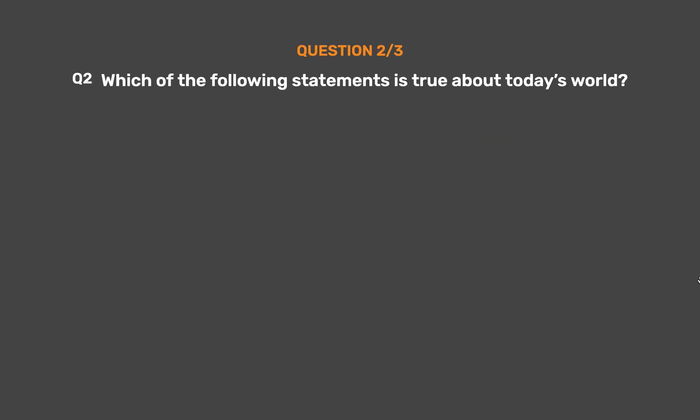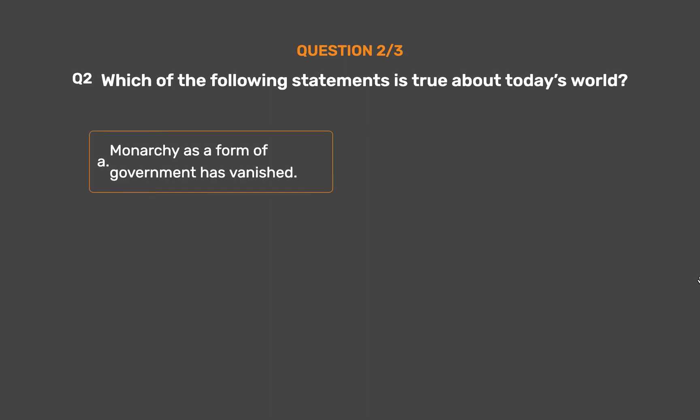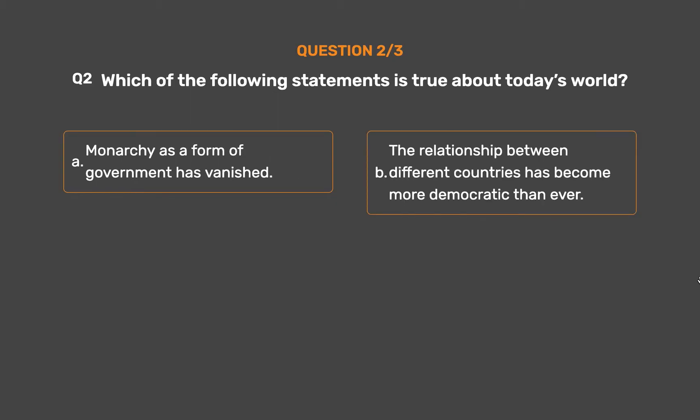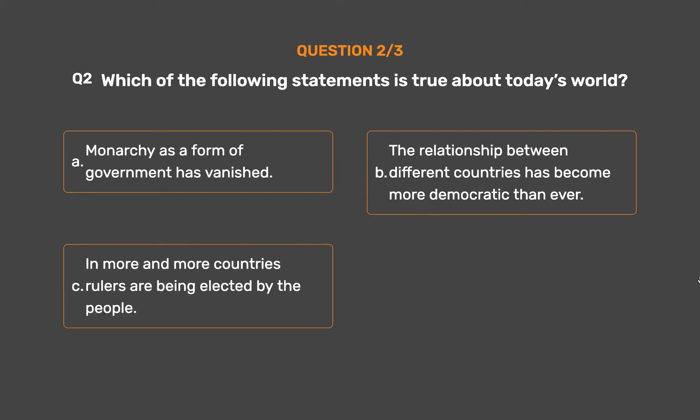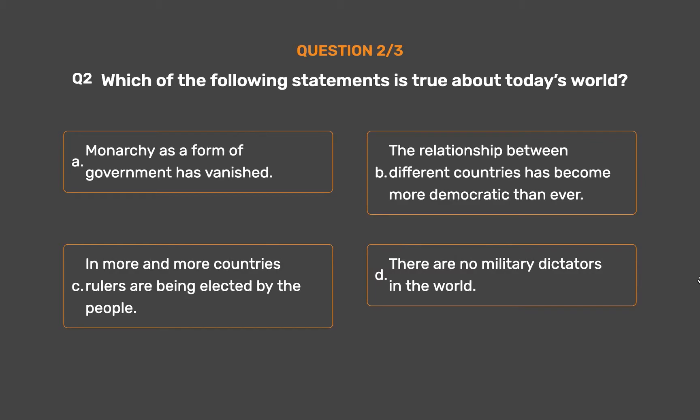Question No. 2. Which of the following statements is true about today's world? Option A: Monarchy as a form of government has vanished. Option B: The relationship between different countries has become more democratic than ever. Option C: In more and more countries rulers are being elected by the people. Option D: There are no military dictators in the world.